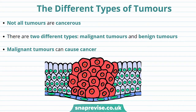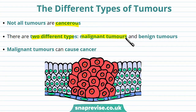Now let's talk about the different types of tumours, because not all tumours are cancerous. There are in fact two different types: malignant tumours and benign tumours — tumours that are harmful and tumours that don't cause much harm.